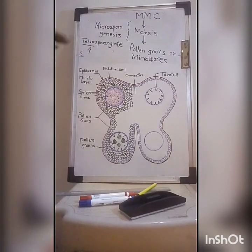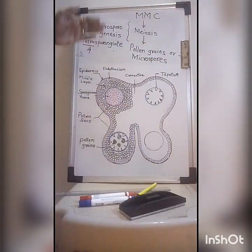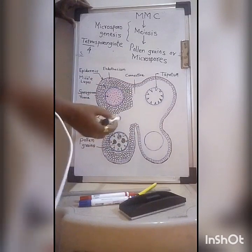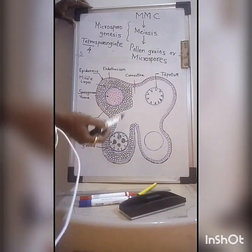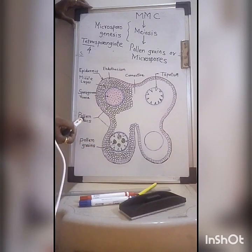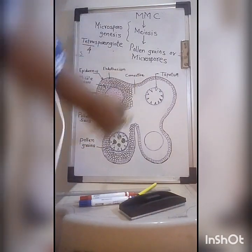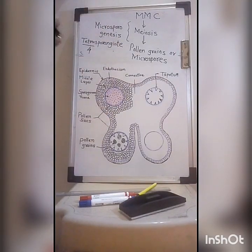This is the entire structure of the transverse section of anther, which shows that pollen grains are produced inside the anther. They are present in the pollen sacs of the anther, and the process by which pollen grains are formed is called microsporogenesis.